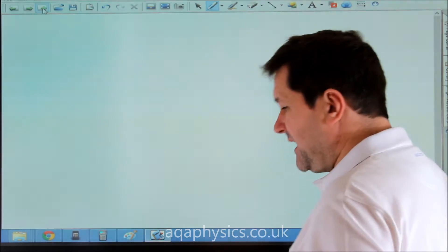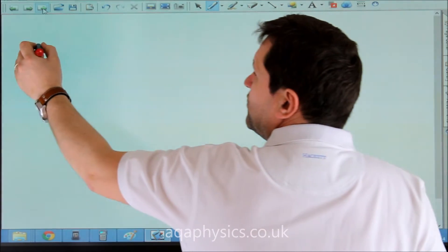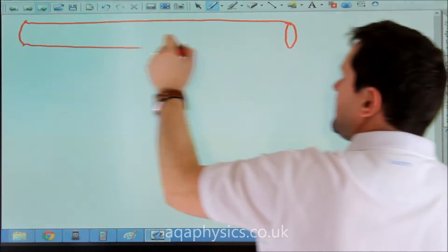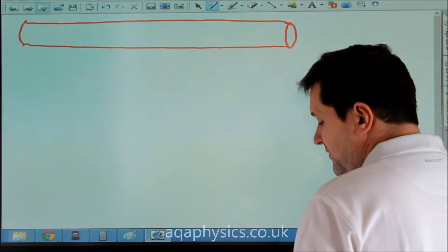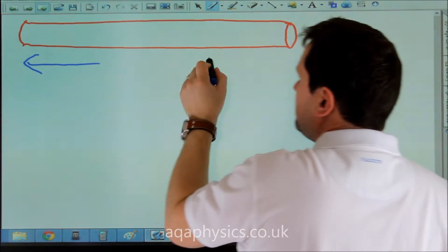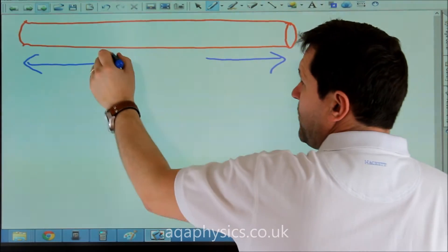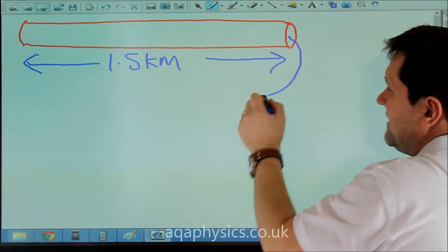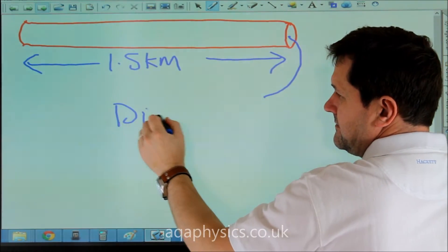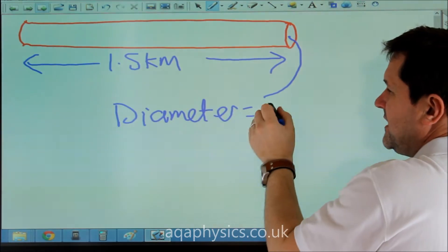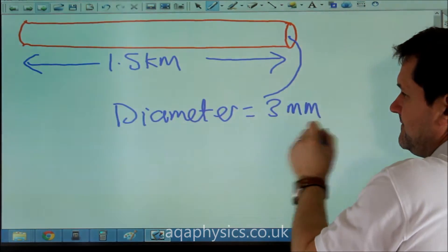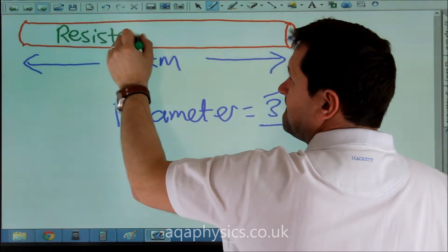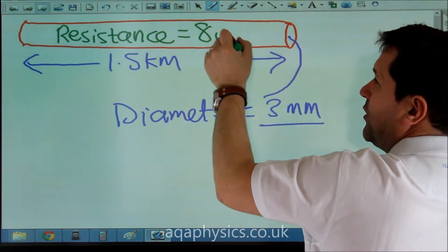A typical problem would be the length of a wire. We can say our length of wire, obviously this is not to scale, we'll make it 1.5 kilometers. We'll say that the diameter equals 3 millimeters, and that the resistance equals 8 ohms.